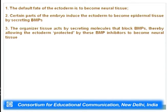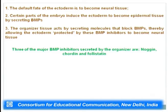The default fate of the ectoderm is to become neural tissue. In regions where the organizer is absent, BMP acts on dorsal ectoderm to induce epidermal ectoderm formation. But right above the organizer, BMP inhibitors are present and inhibit epidermal induction, so the dorsal ectoderm gives rise to neural ectoderm. The three major BMP inhibitors secreted by the organizer are Noggin, Chordin, and Follistatin.